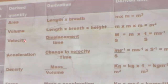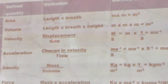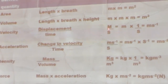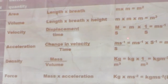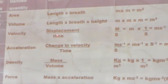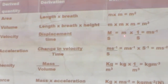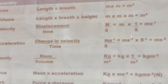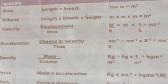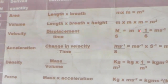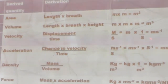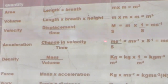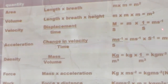Then we have velocity. The derivation of velocity is displacement divided by time. Displacement is measured in meter, and time is measured in second (s). So we have meter divided by second, which is the same as meter multiplied by the inverse of s — giving us meter per second (m·s⁻¹). Therefore the derived unit of velocity is meter per second.